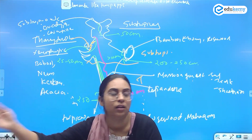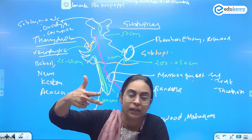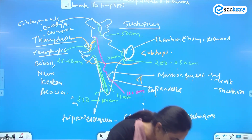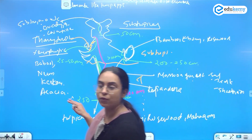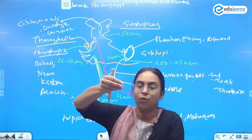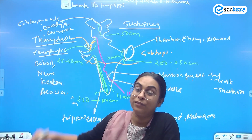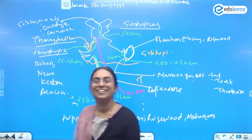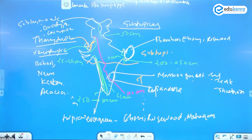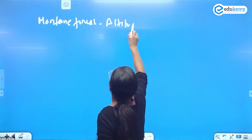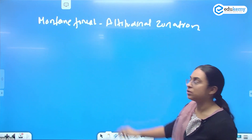When you expand on the montane forest short note, explain what it is, where it is found, what the differences are, what are the reasons for deforestation, and what are the problems. Compare Western Himalayas versus Eastern Himalayas. In the montane forest you can mention the altitudinal zonation — this is a key concept.